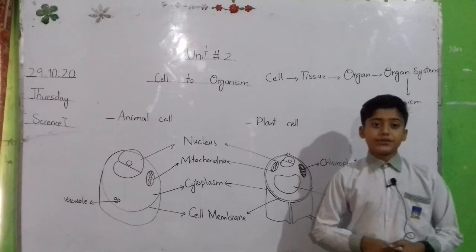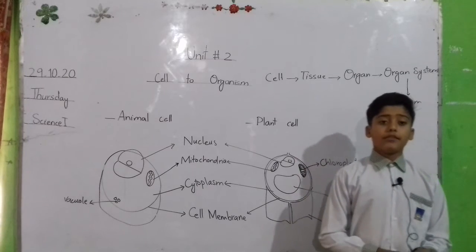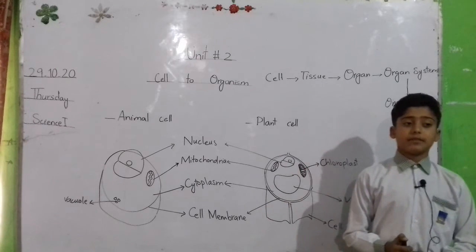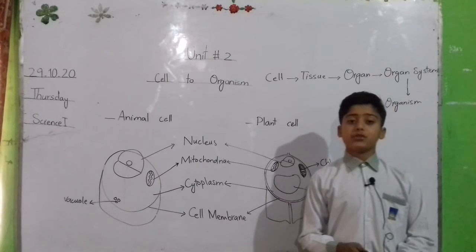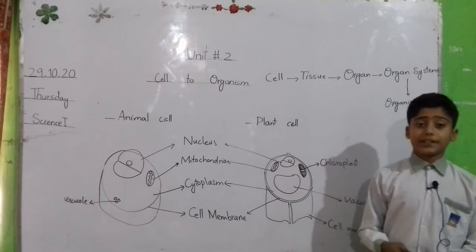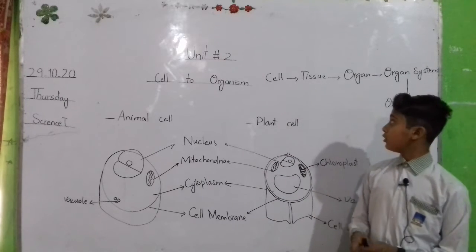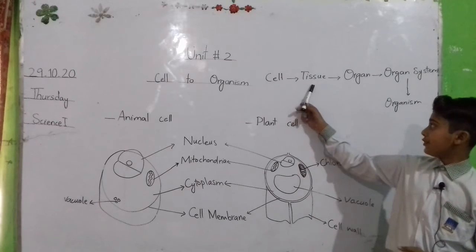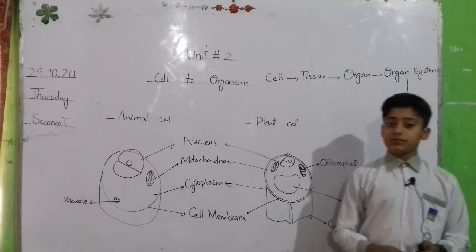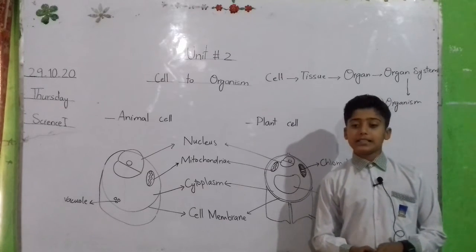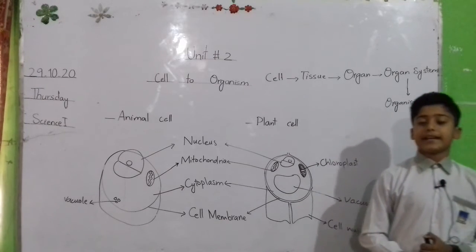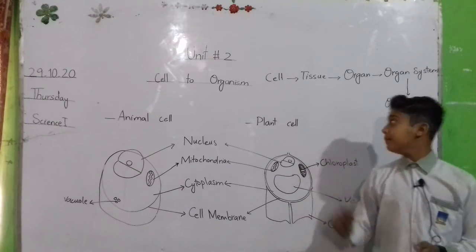Cell tissue. Group of cells performing the same function make the tissue. For example, muscle tissue, connective tissue, manic tissue. Group of tissue make an organ. For example, heart, lungs.